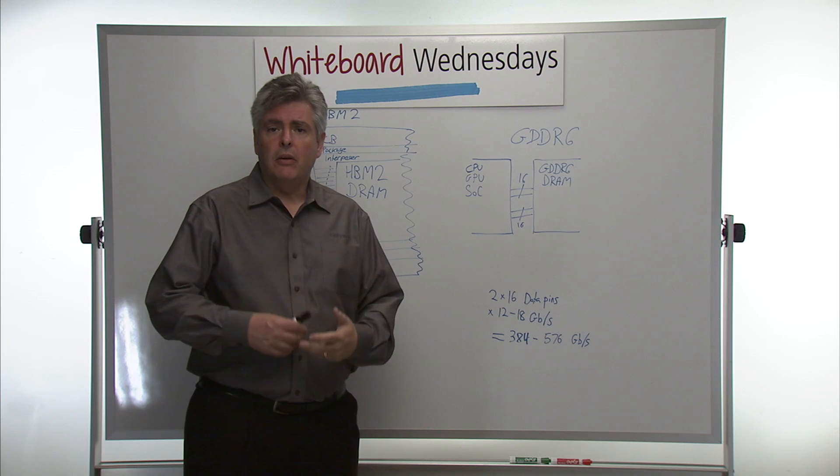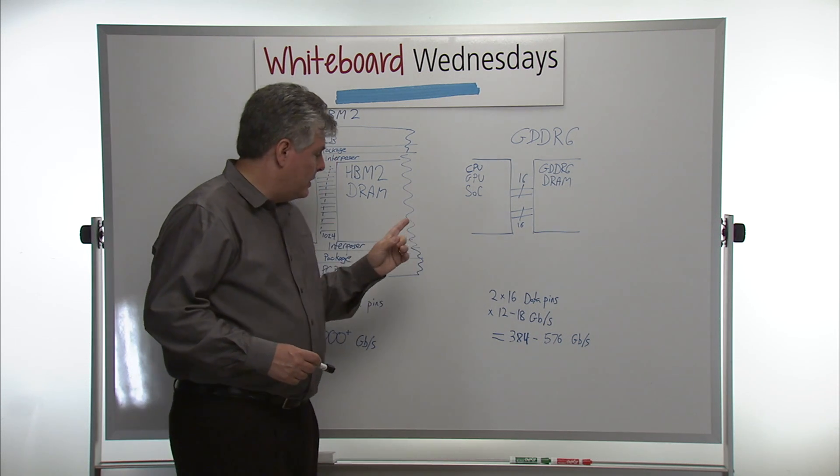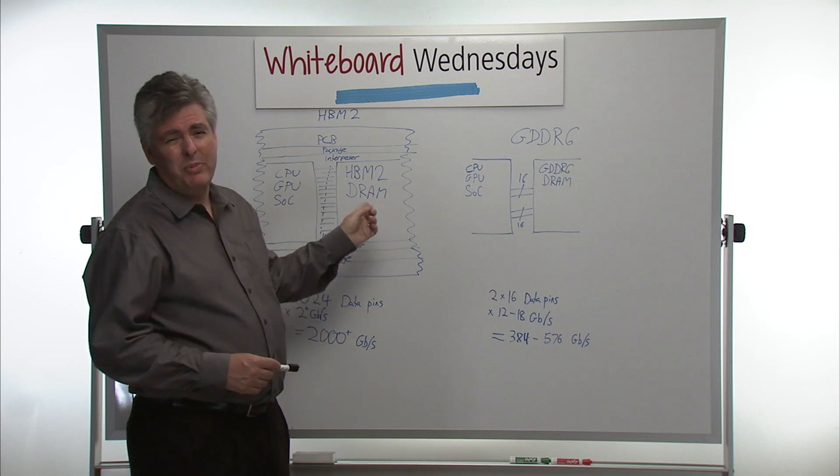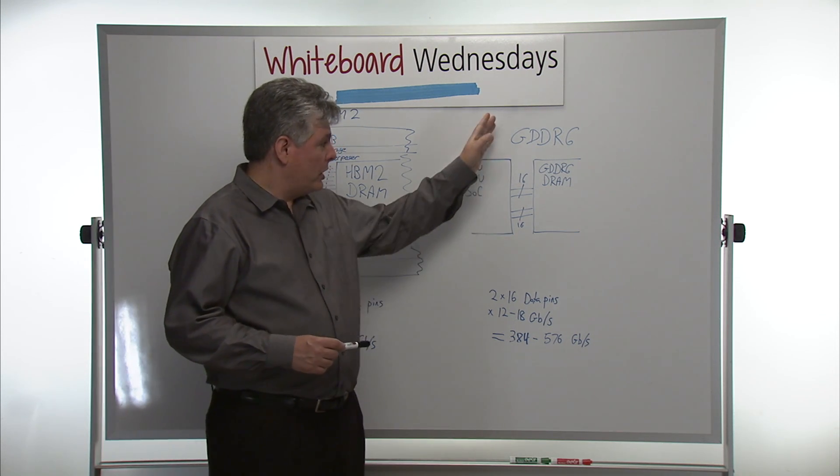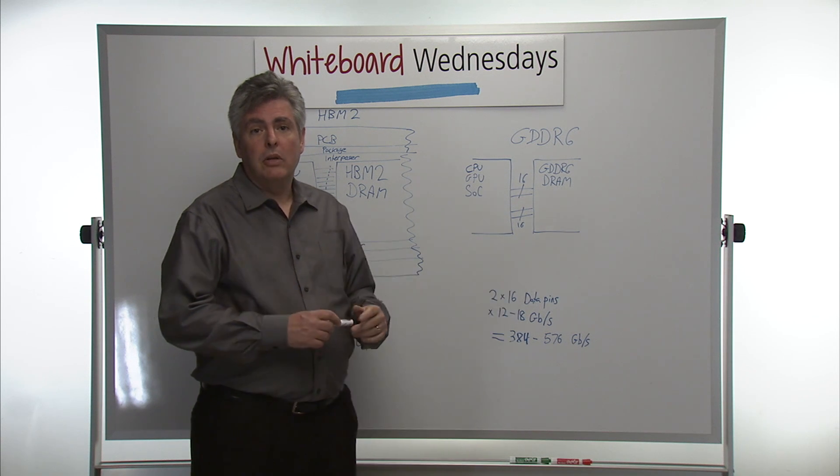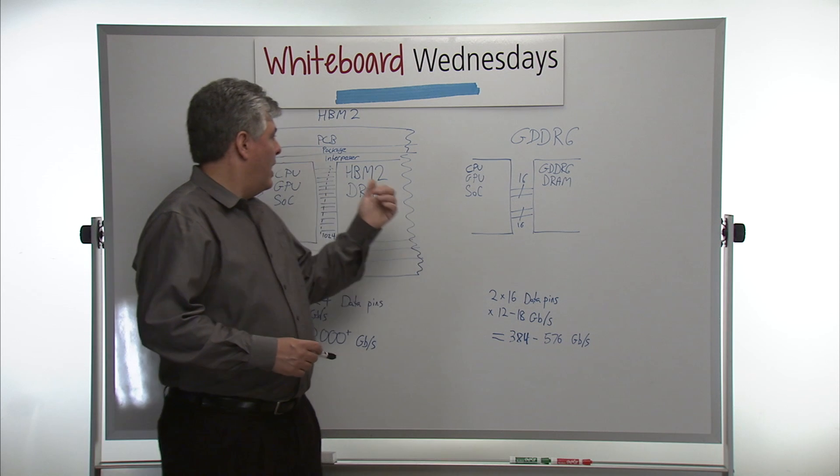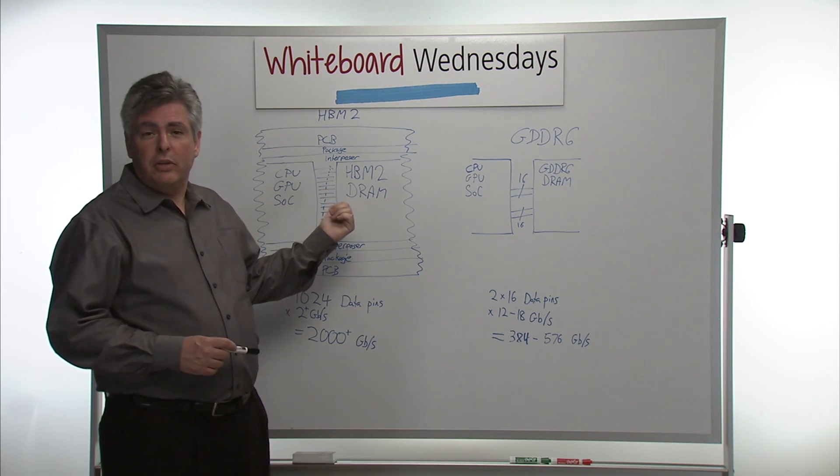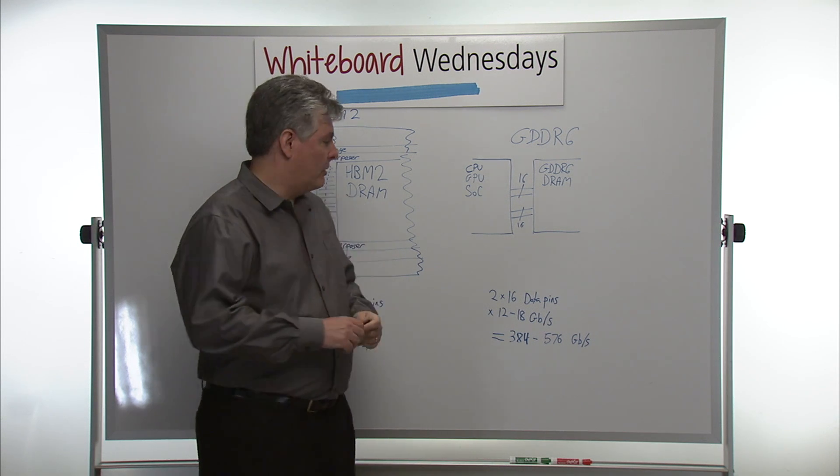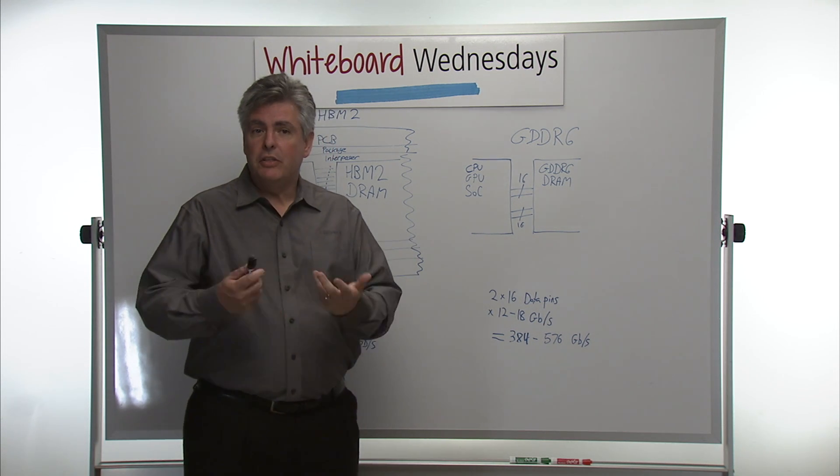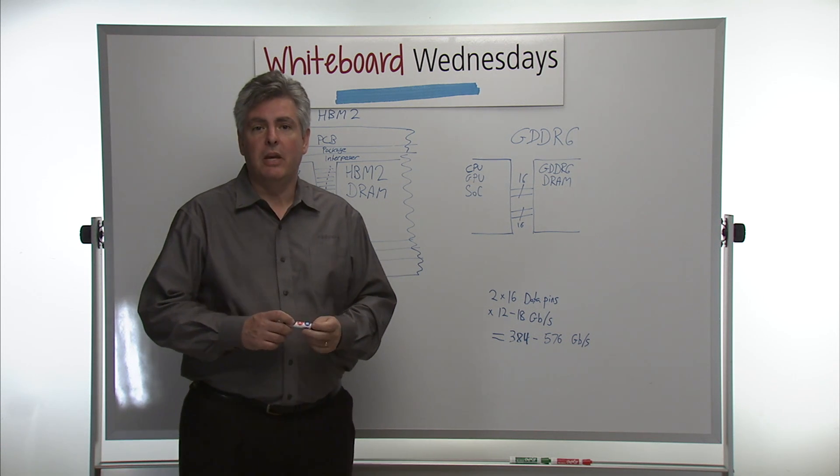So when deciding between these two technologies, there's a number of things that you have to think about. Bandwidth is certainly one. If you need the absolute highest bandwidth, HBM2 is probably the way to go. If you need a little bit less bandwidth or if you're willing to put more dies around your SoC, then GDDR6 is an option. HBM2, you've got a manufacturing issue that you've got to deal with. GDDR6, you've got a silicon package board co-design issue that you've got to deal with. They're both great technologies. Which one is the right for you will be determined by your bandwidth and your design capability.